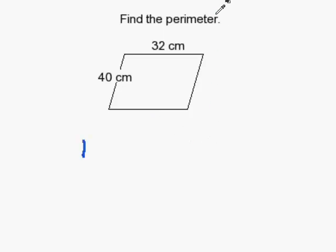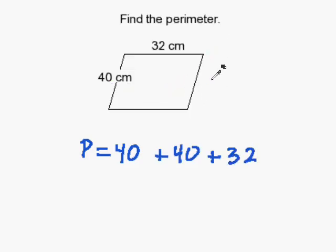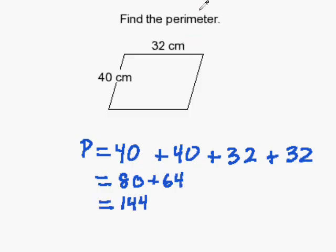So let's go ahead and add them up. So that's 40 and 40 and 32 and 32. If we continue to add, we get 80 plus 64 and then 144.